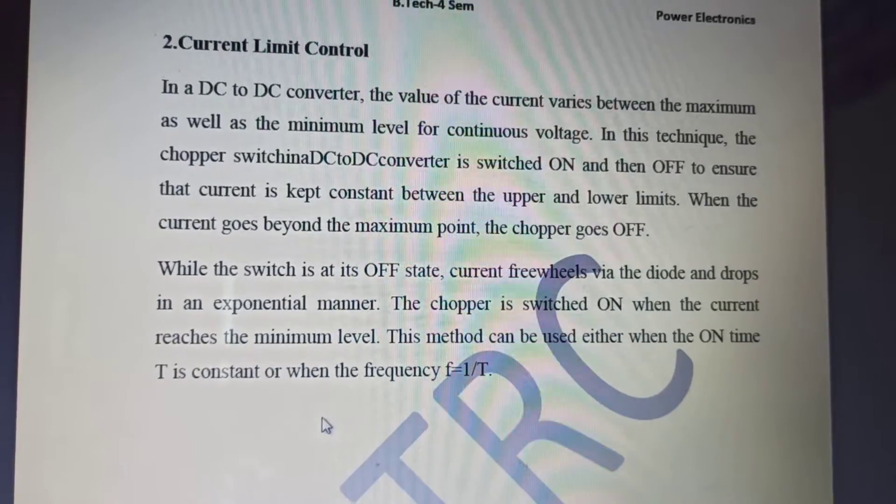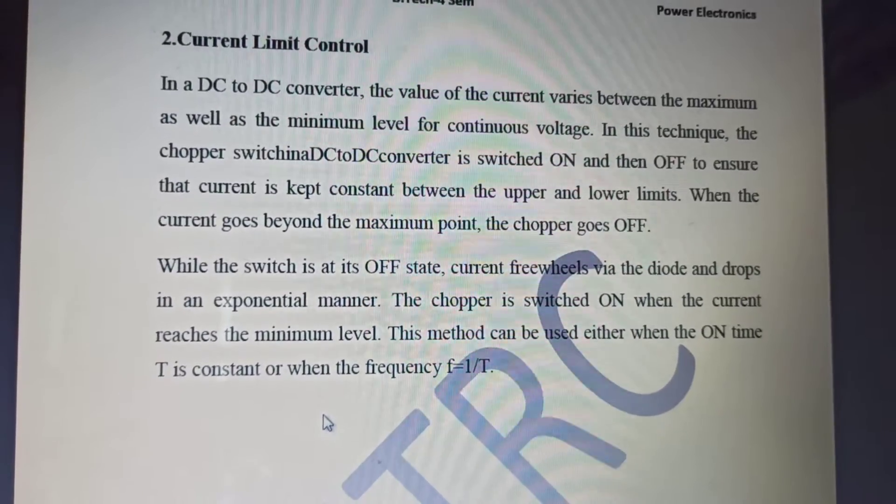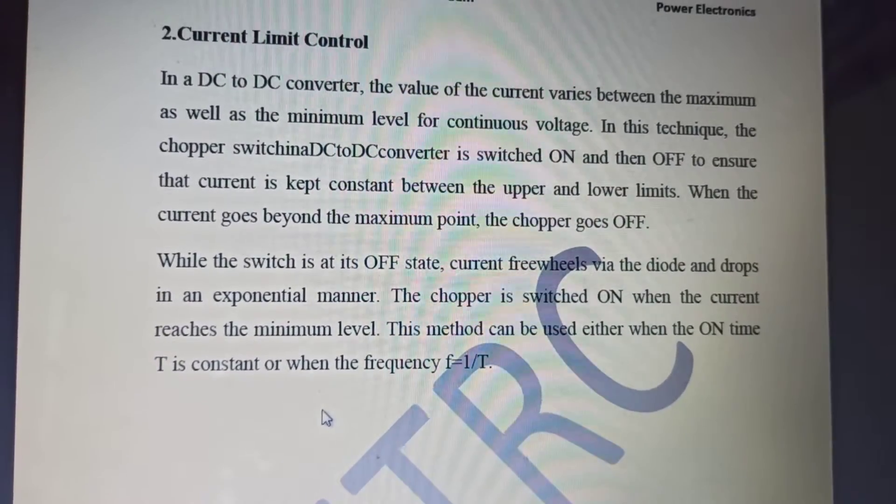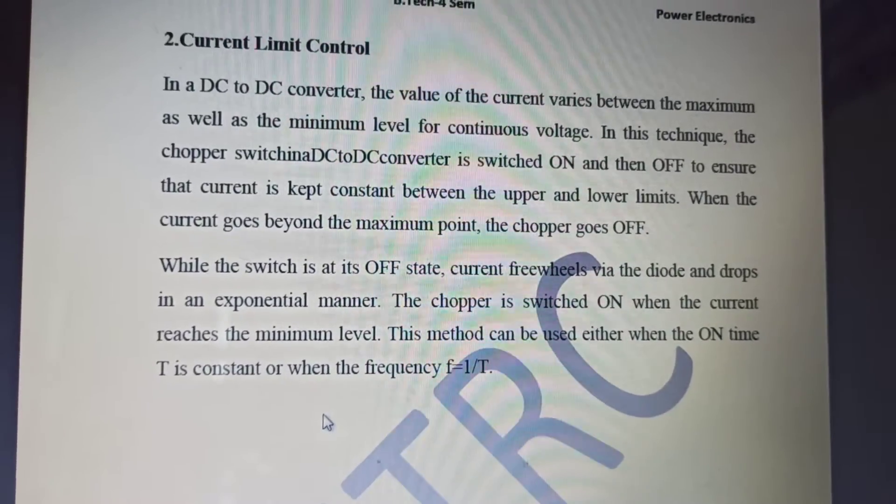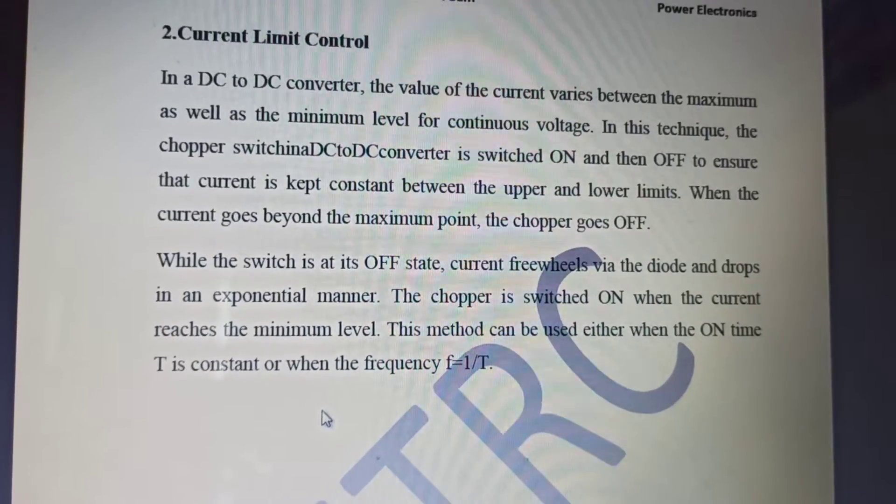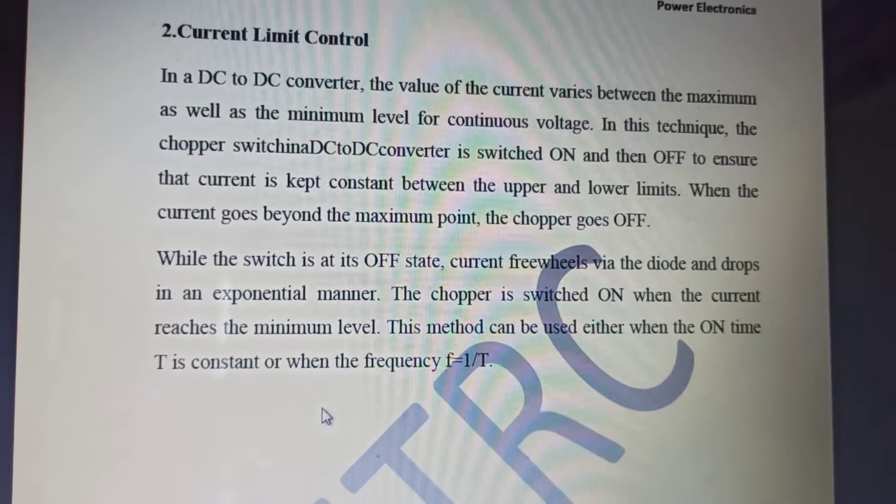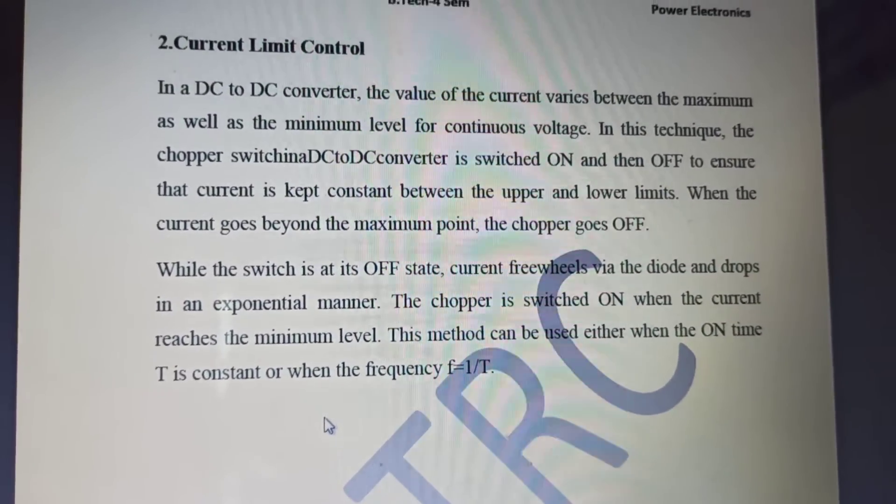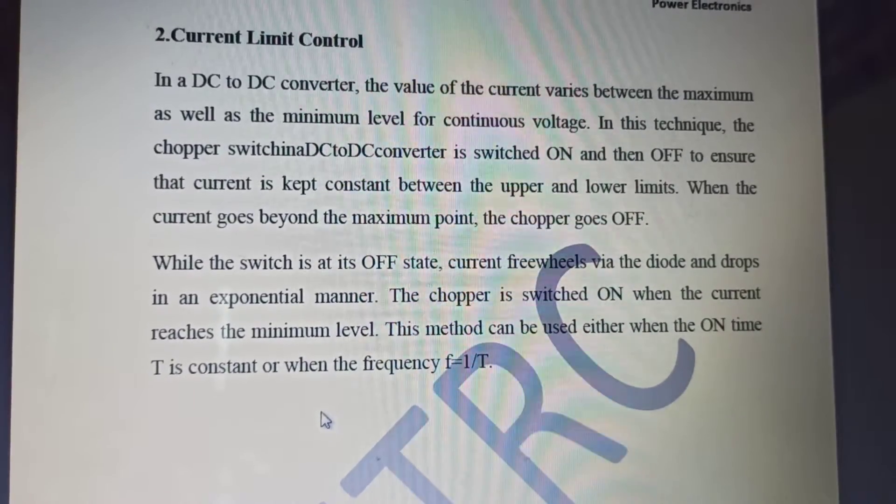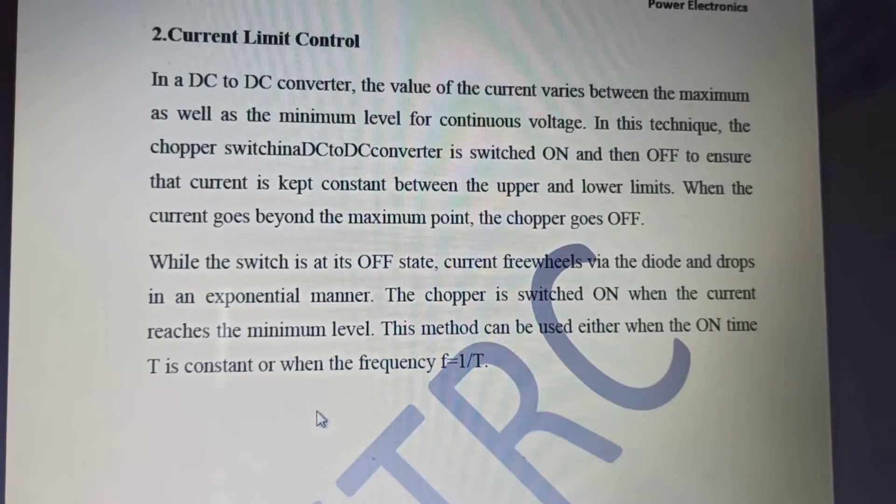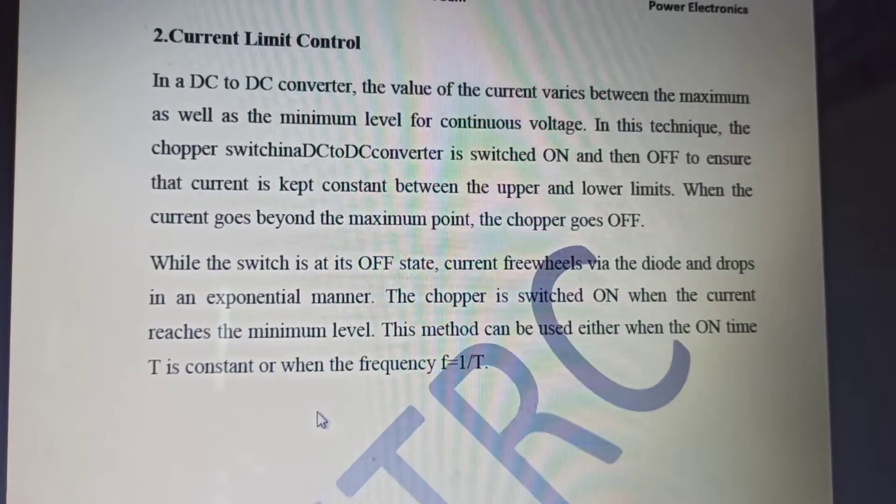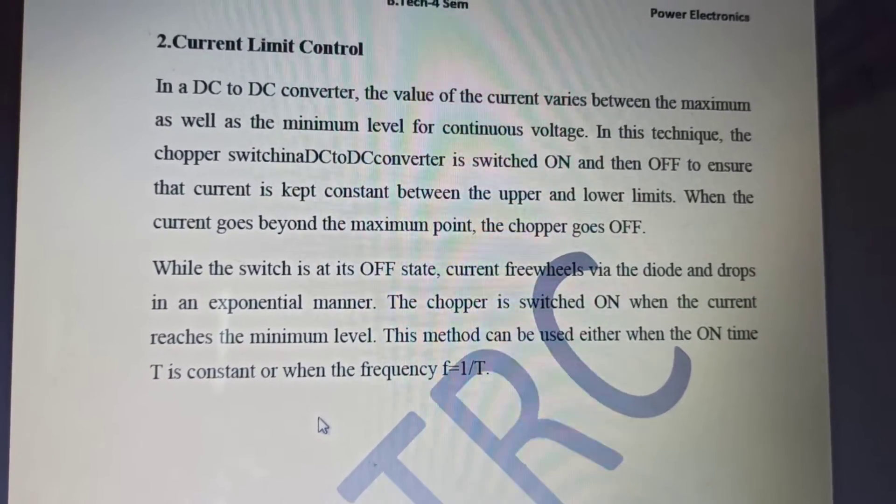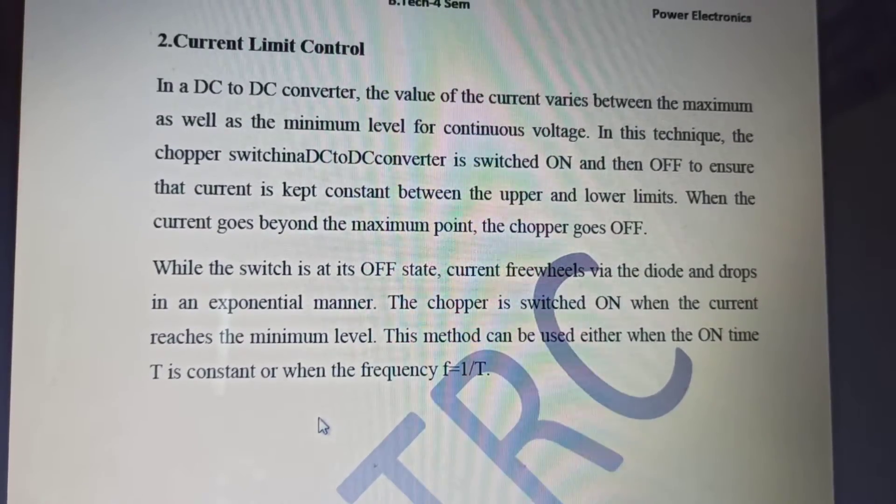More or less like a Schmitt trigger means that when the transition point comes, it has to remain in its state. For example, the upper threshold is at 6 amperes, so whenever the current tries to go above 6 amperes, then for sure the switch will be turned off. Is it clear how the switching on and off of a switch is carried on?